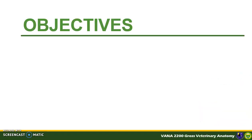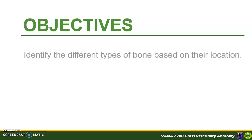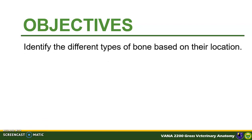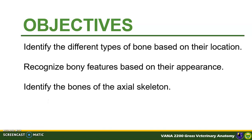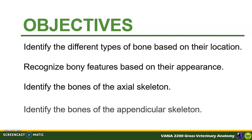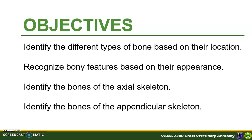At the end of this module, you should be able to: identify the different types of bone based on their location; recognize bony features based on their appearances; identify the bones of the axial skeleton; and finally, identify the bones of the appendicular skeleton.